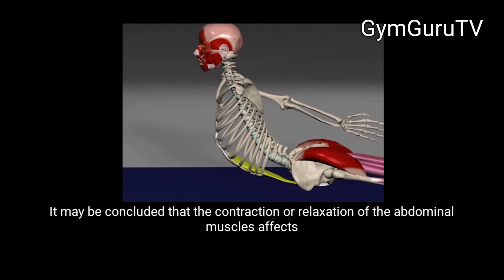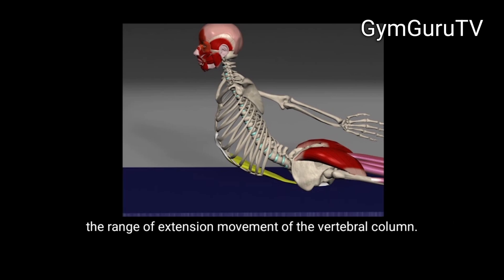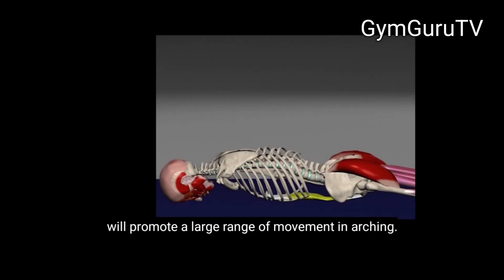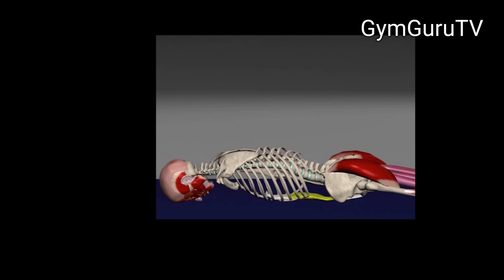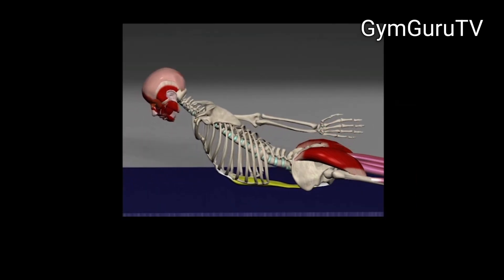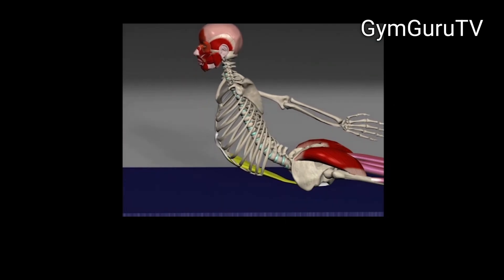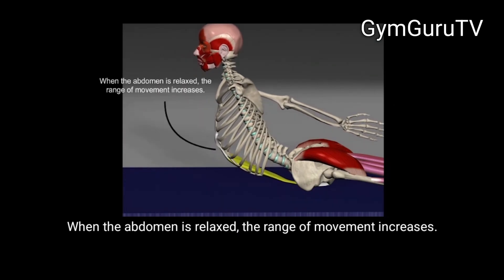It may be concluded that the contraction or relaxation of the abdominal muscles affects the range of extension movement of the vertebral column. For example, extension of the back without contraction of the abdominal muscles will promote a large range of movement in arching. When the abdomen is relaxed, the range of movement increases.